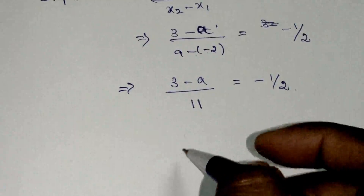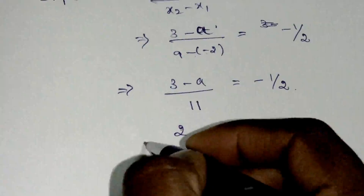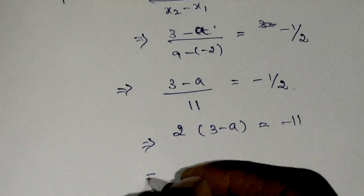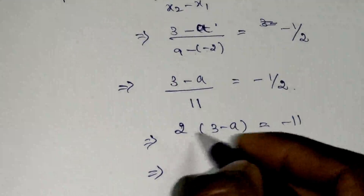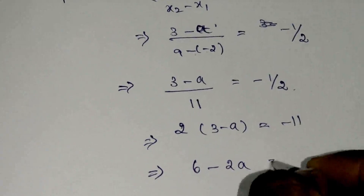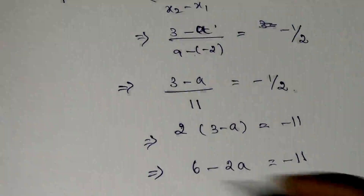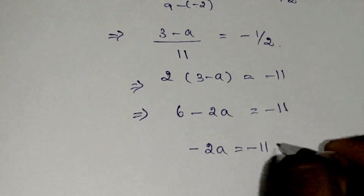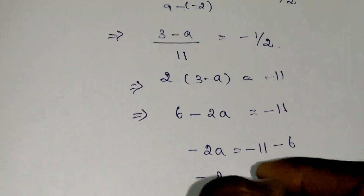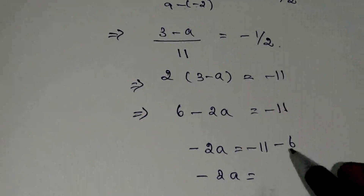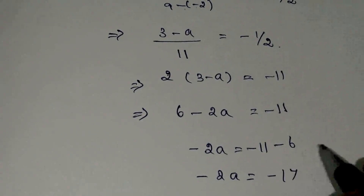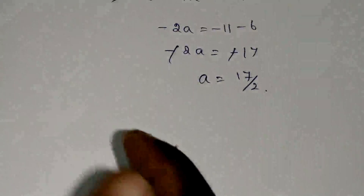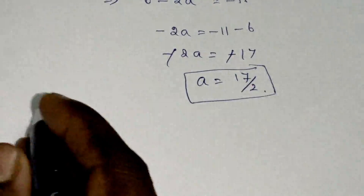Now cross multiplication. This 2 will come here: 2 times 3 minus A is equal to minus 11. Removing the bracket: 6 minus 2A equals minus 11. Numbers on one side and variables on one side: minus 2A equals minus 11 minus 6, which is minus 17. Minus minus gets cancelled, so A is equal to 17 by 2.